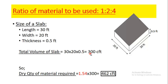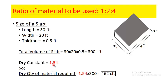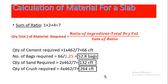To get the dry volume of concrete, we multiply the wet volume by the dry constant 1.54. So 1.54 multiplied by 300 cubic feet gives us 462 cubic feet, which is the dry quantity of material required for the slab. The next step is the sum of the ratio: 1 plus 2 plus 4 equals 7.